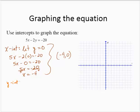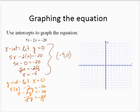For the y-intercept, we let x equal 0. So 5 times 0 minus 2y equals negative 20, giving us negative 2y equals negative 20. Dividing through by negative 2, y equals 10. So the y-intercept is 0, 10. That's enough information to graph the line. We plot the point negative 4, 0 and the point 0, 10, then draw the line through the points.